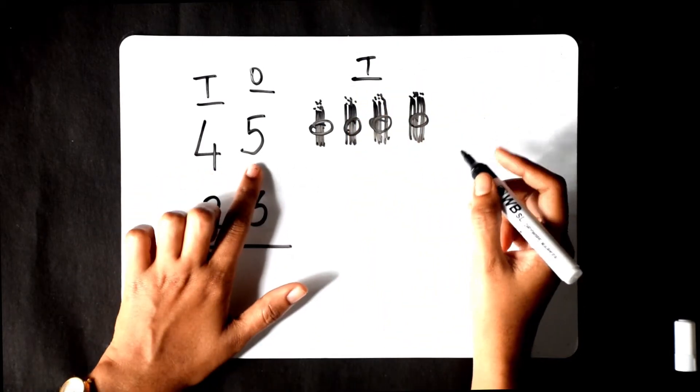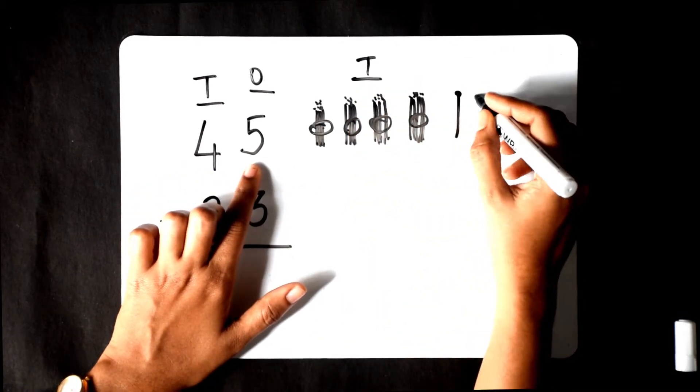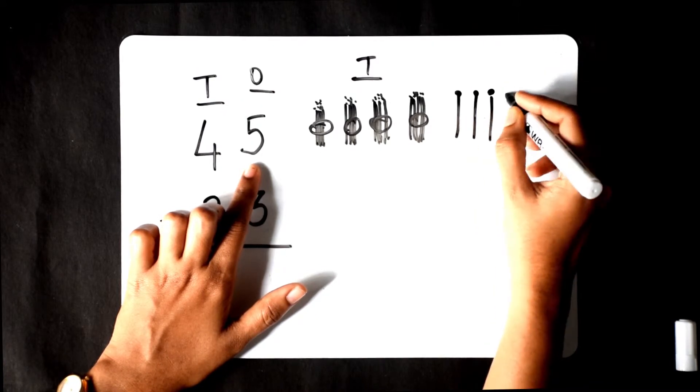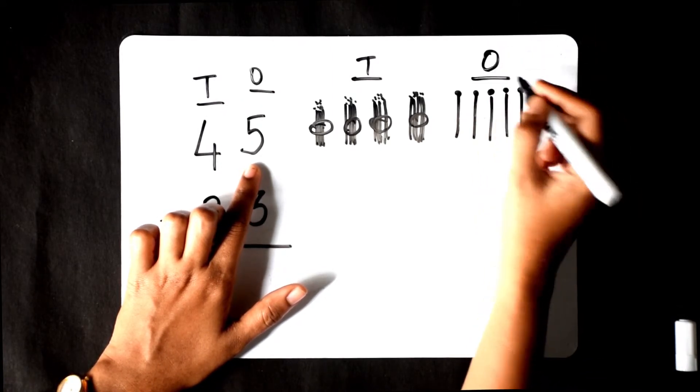Now, for the ones, we have 1, 2, 3, 4, and 5. These are the ones.